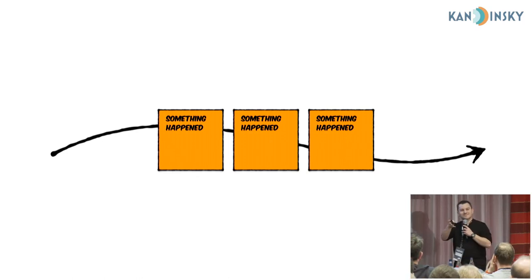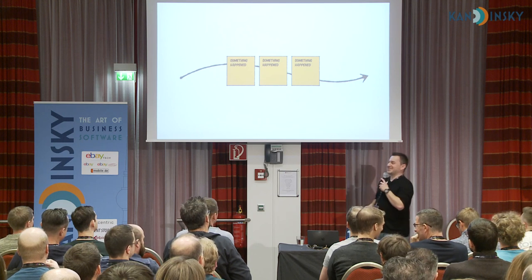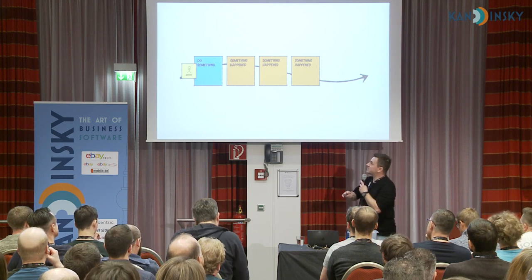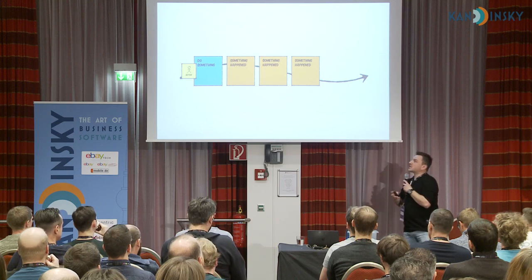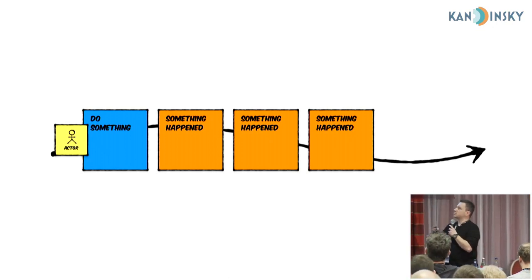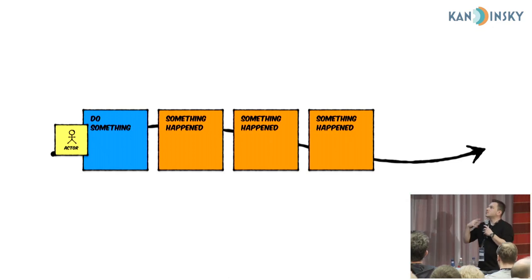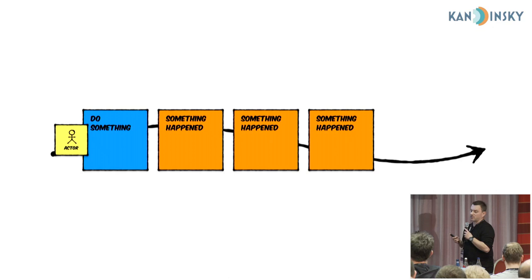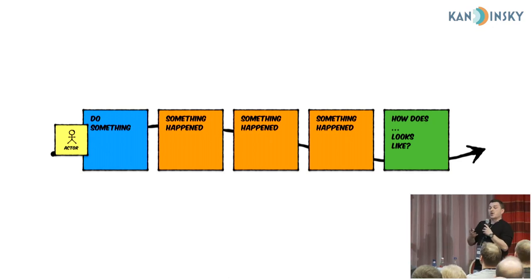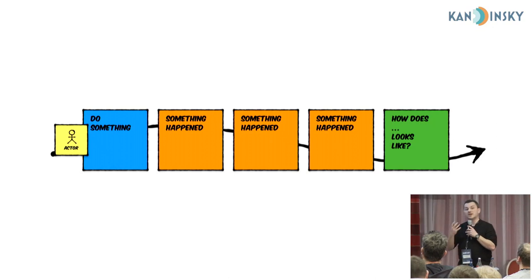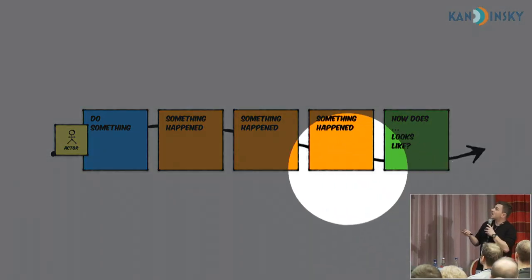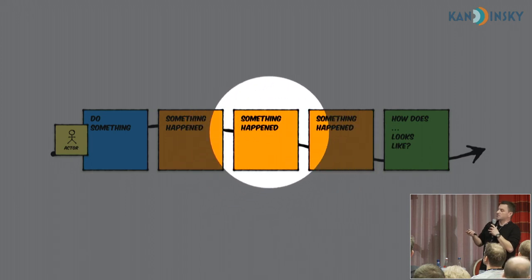The command, represented as a blue sticky note in event storming, can express an actual decision — when a user decides to do something, we can model this action and capture that someone would like to request something from our application. The last message type is the query — asking for data. The client may ask our system how things look right now, and we've got a state somewhere under the hood, composed from events.